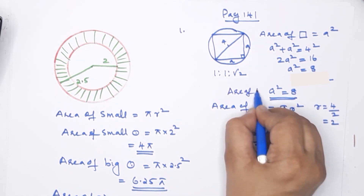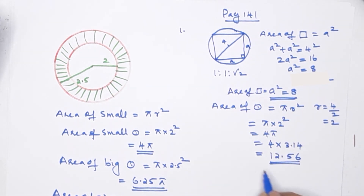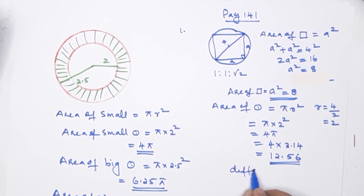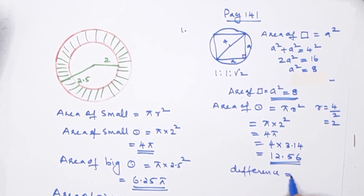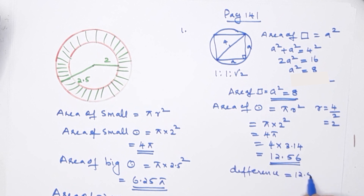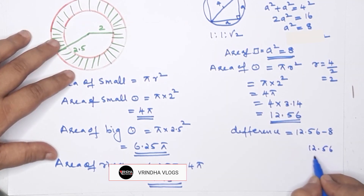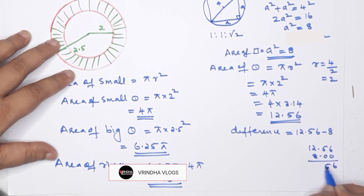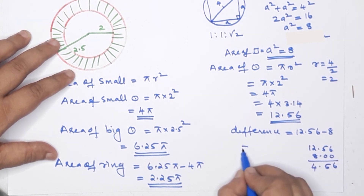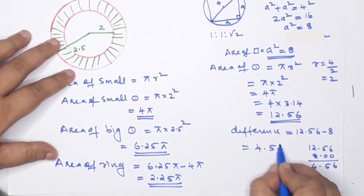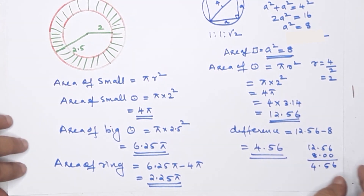Difference of areas = 12.56 − 8 = 4.56. The answer is 4.56. That is the difference. Clear?